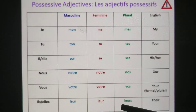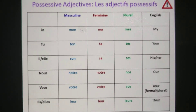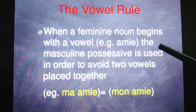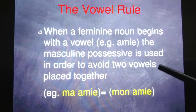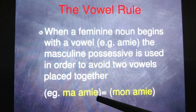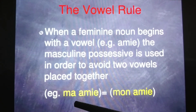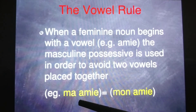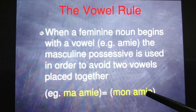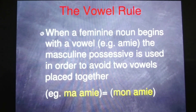Remember that for feminine singular nouns starting with a vowel, we use mon, ton, son instead of ma, ta, sa. This is the vowel rule: when a feminine noun begins with a vowel — like 'amie' — the masculine possessive form is used to avoid two vowels placed together. For example, 'amie' is feminine, but we write mon amie, ton amie, son amie — my friend, your friend, his or her friend. So with feminine nouns starting with a vowel, we use mon, ton, son.